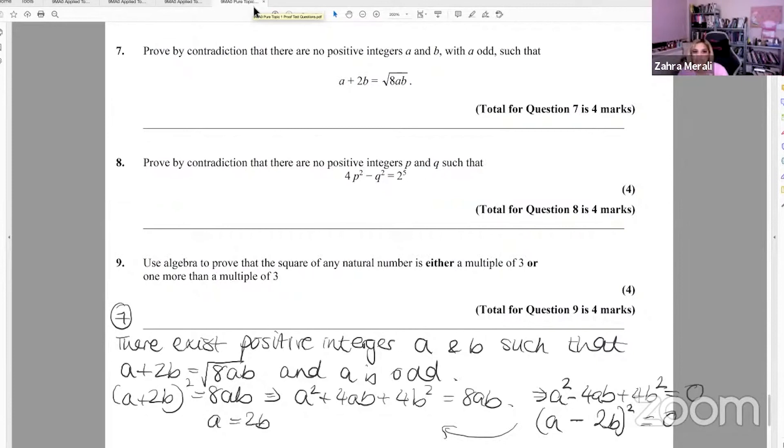And this is a contradiction, because if a is even, a has to be even, not odd, because you've got 2b. So anything multiplied by two is an even number. So you'd say this is a contradiction as a is even, hence assumption false. And then you just rewrite the question. So there are no positive integers a and b with a odd, such that.